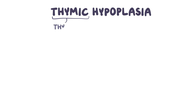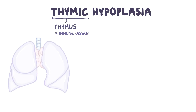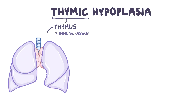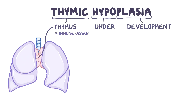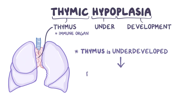In thymic hypoplasia, thymic refers to the thymus, which is an immune organ that sits between the lungs. Hypo refers to under, and plasia refers to development. So thymic hypoplasia is a condition where the thymus is underdeveloped and has a reduced number of cells.